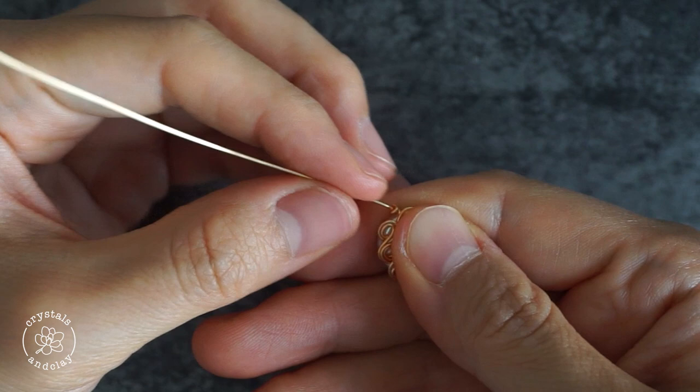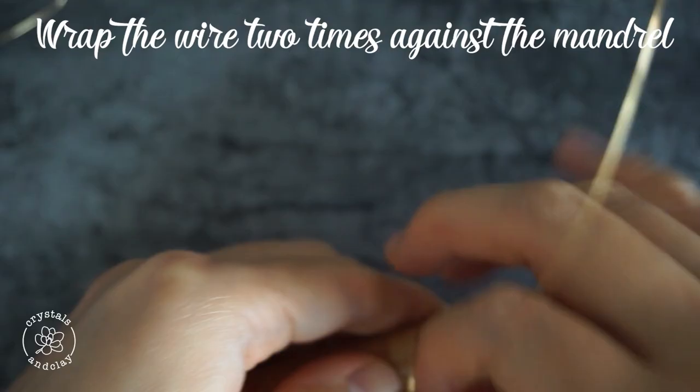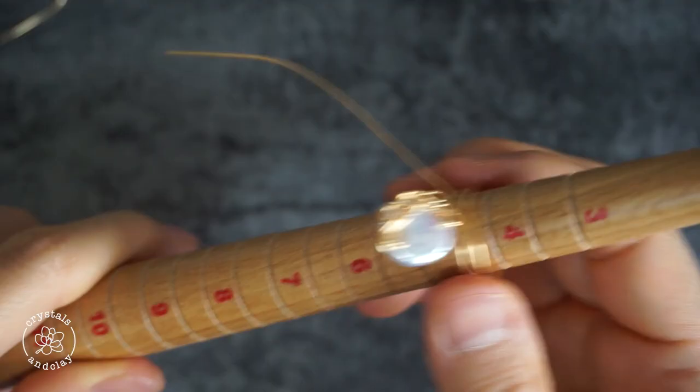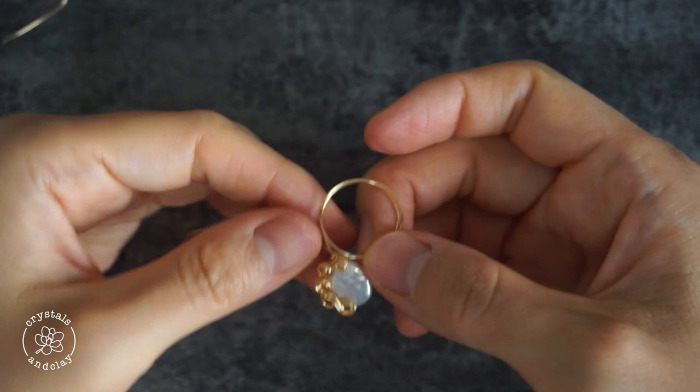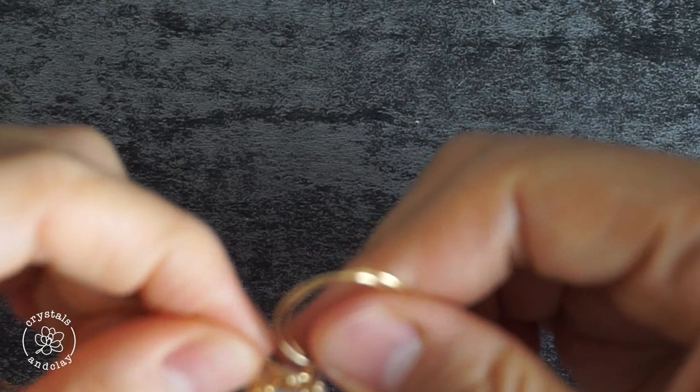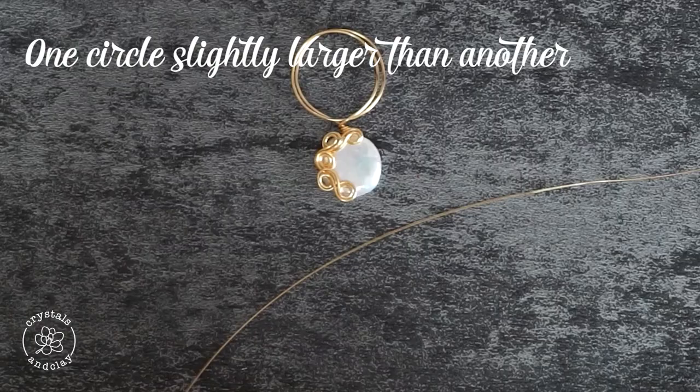For the long wire left on top of the bead, we are going to use it to make a large hoop. Wrap the wire against the mandrel two times to create the basic shape. Wrap the wire at the bottom to secure the hoop. The ideal hoop should have one circle slightly larger than another.